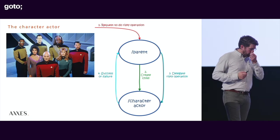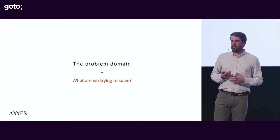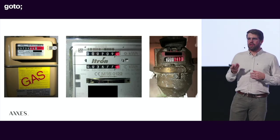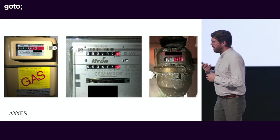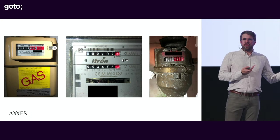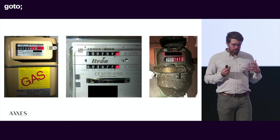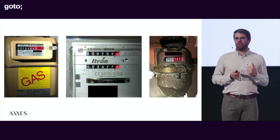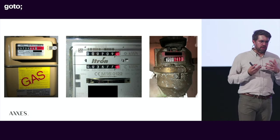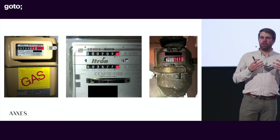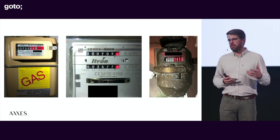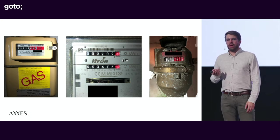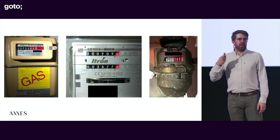Let me explain the problem we were actually solving. This is what utility meters look like in Belgium — electricity, gas, and water. These devices give you a single number: the total consumption measured since the device was produced at the factory. What we really care about is how much that number changes, because that's what you get billed for. We were at an IoT company that made devices that connected to these meters — optically or via a serial interface — and sent data over the internet to a backend to be processed and analyzed.